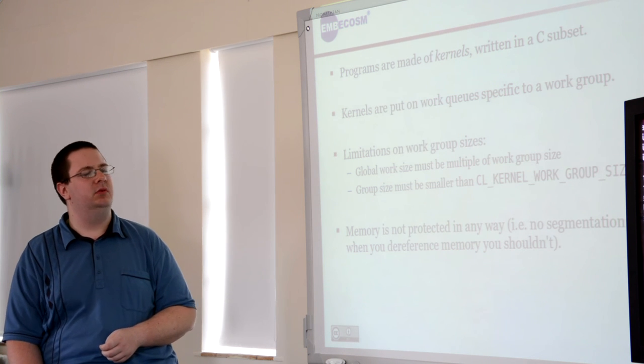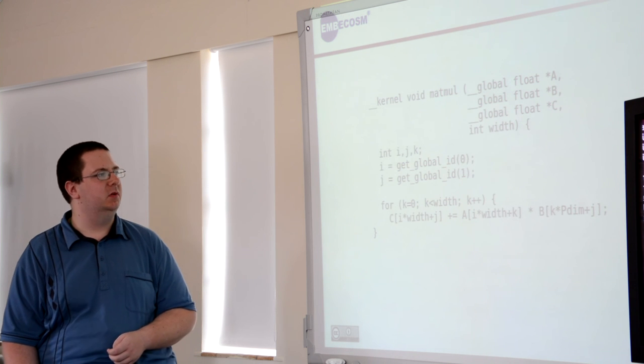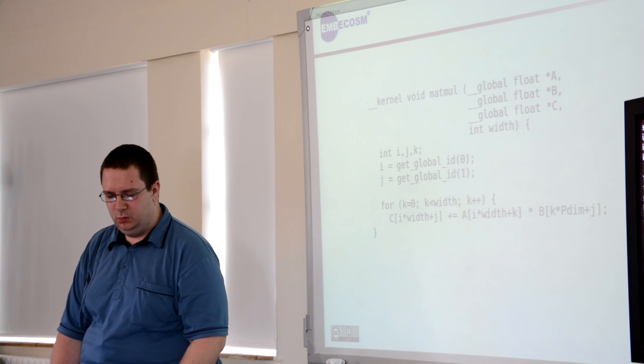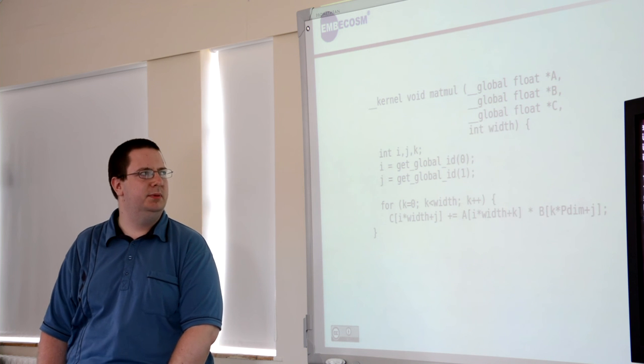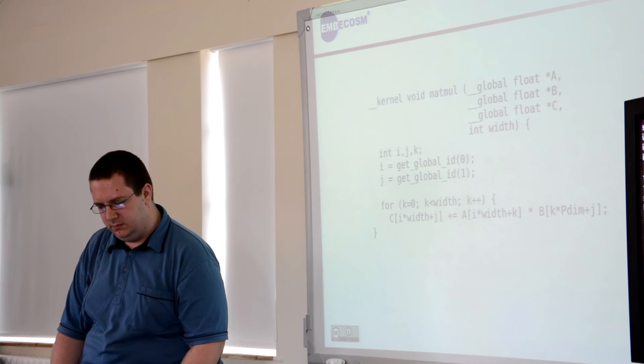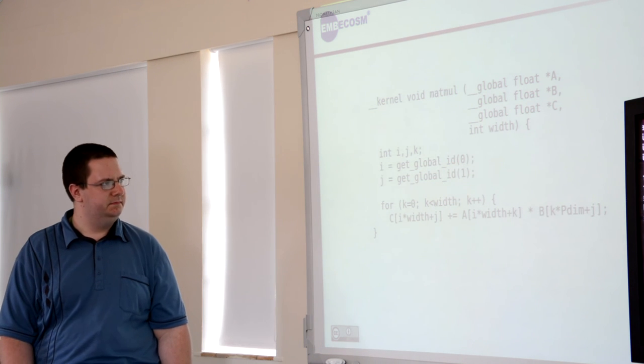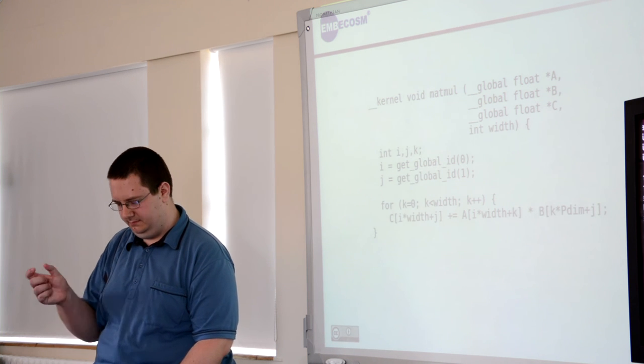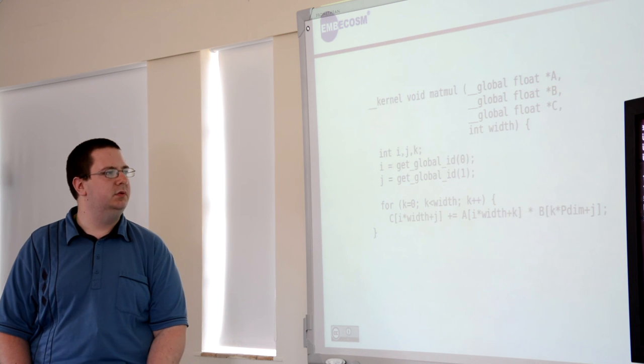As a quick example, a naive matrix multiply, where you have your two input matrices A and B, and your C is your output. I and J are similar to the core identifiers that we had in the example I showed earlier.